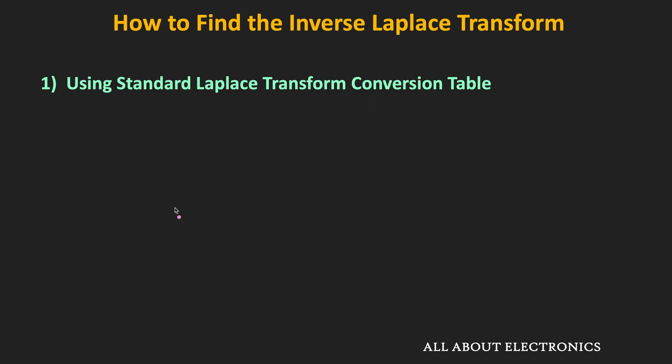Sometimes the function X(s) might be in a form where we cannot directly use the Laplace transform table. In such cases, using the partial fraction expansion method we can rewrite X(s) in a form suitable for the table. Once we convert the function using partial fraction expansion, we can again use the conversion table to easily find its inverse Laplace transform.